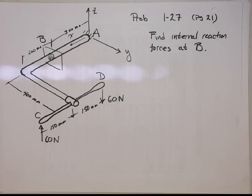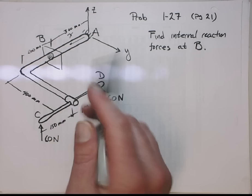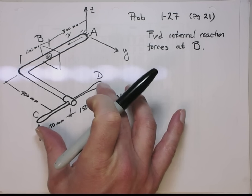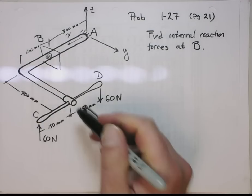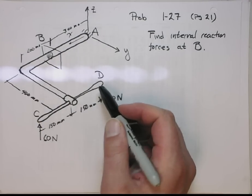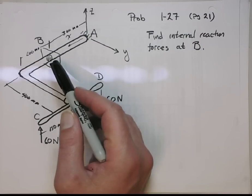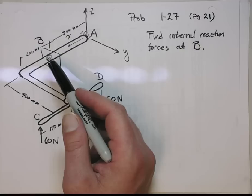So here's the basic problem. You have this bent shaft here, which is fully fixed at point A. There's this sort of wrench device which is being torqued with a downward force at D and an upward force at C. You're supposed to find the internal reaction forces, the moments, and the forces at point B.